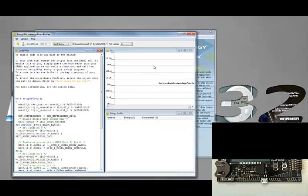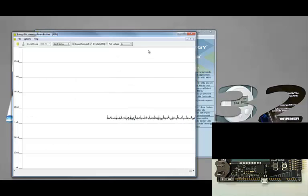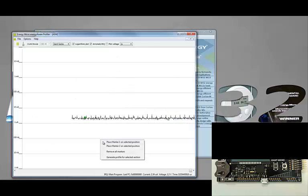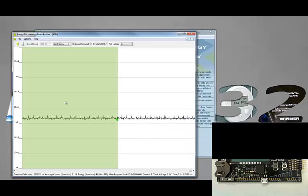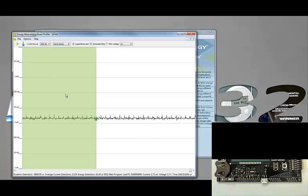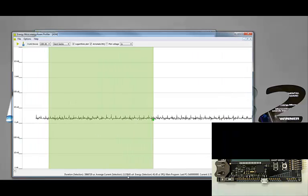First I will measure the average current consumption in the profiler window by placing two markers like this. And then the average consumption will show up as a number at the bottom of the profiler. It is around 2 microamps.